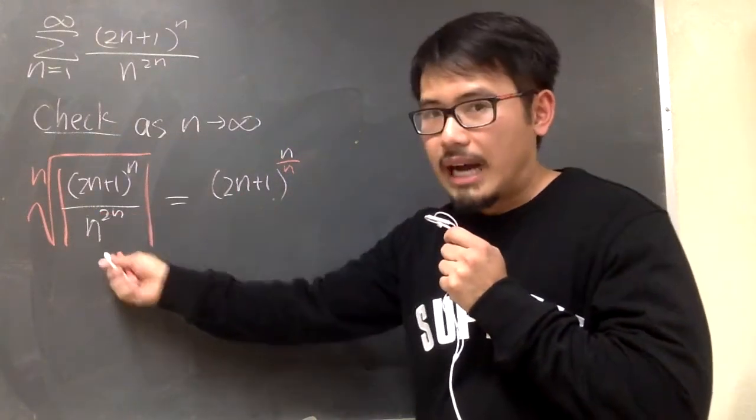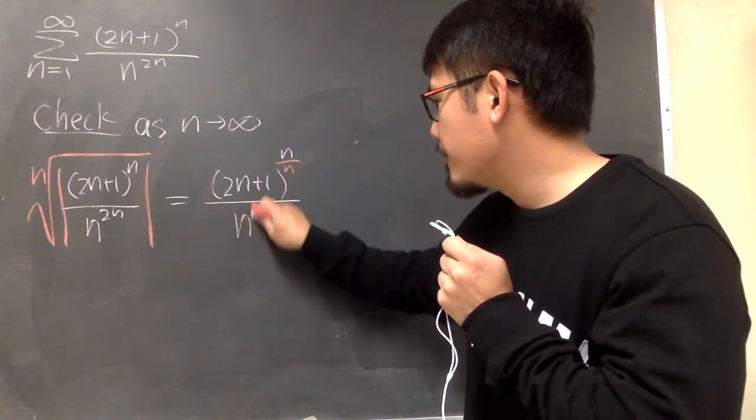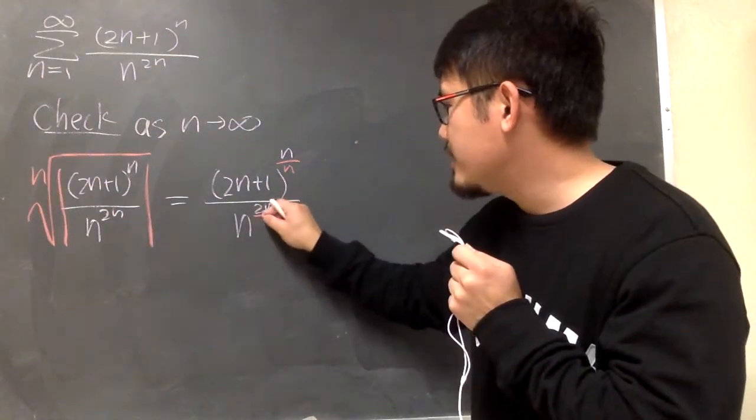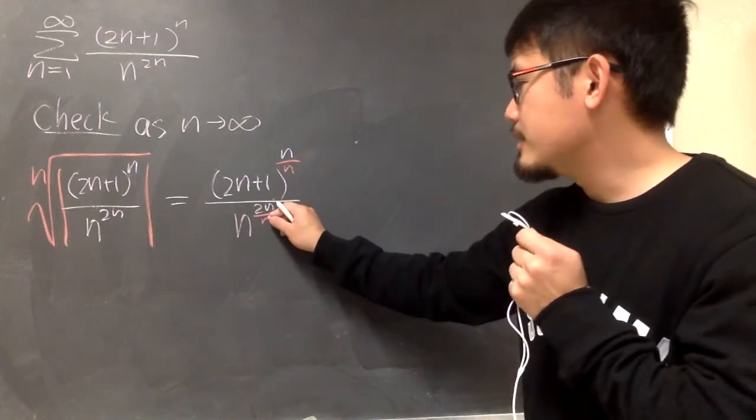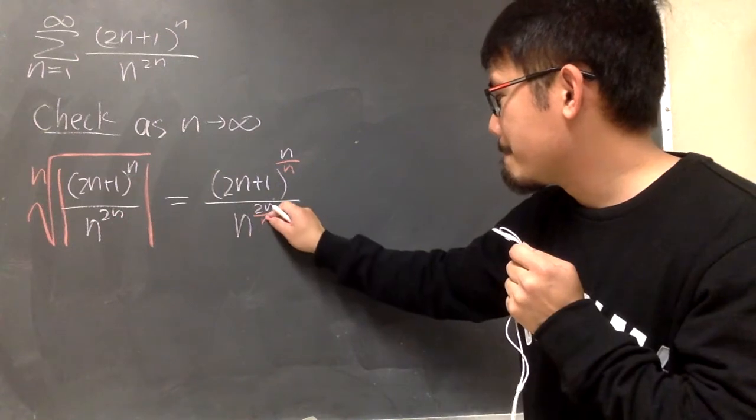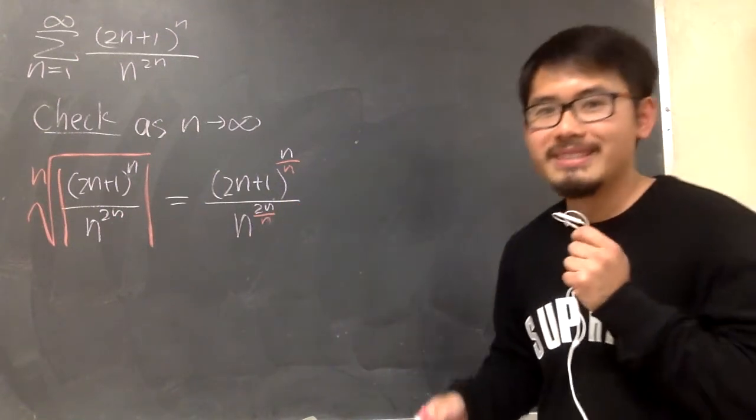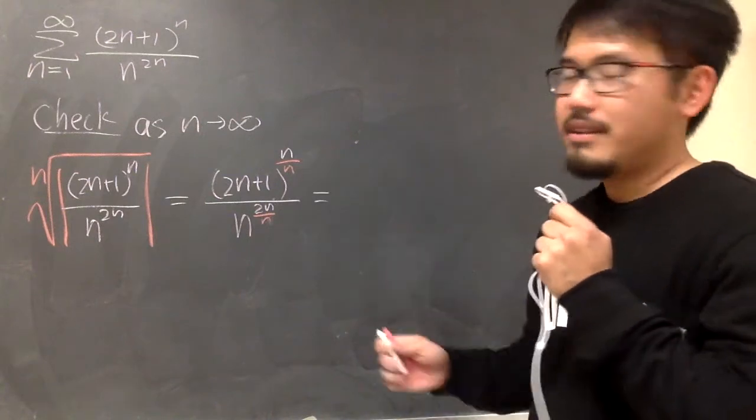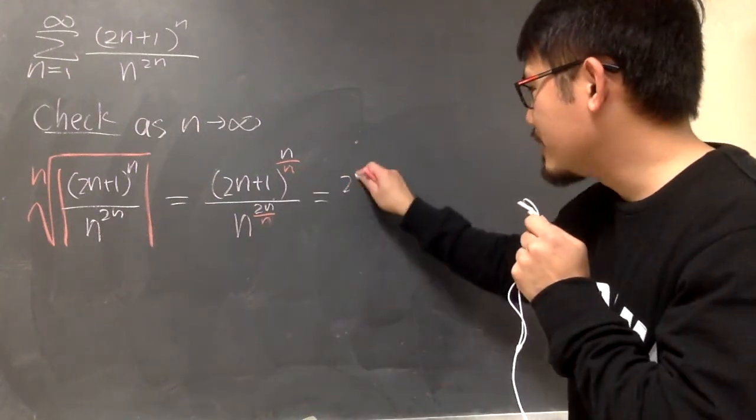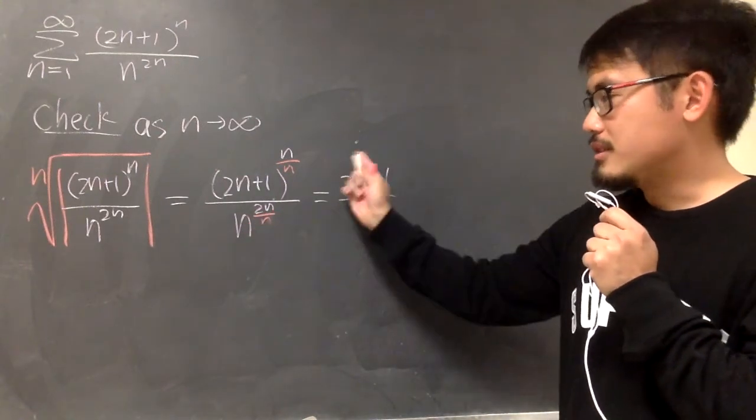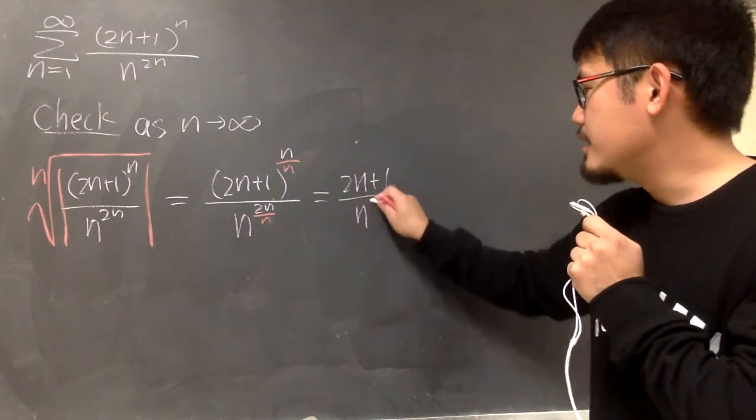Likewise, on the denominator, we will have n to the 2n, and then, once again, the nth root, we have to divide this exponent by n. So, this is what we have right here. Anyways, this is what we have, and then, n over n is just 1. On the top, we have 2n plus 1. Over, on the bottom, n over n is out, so we have just n squared.